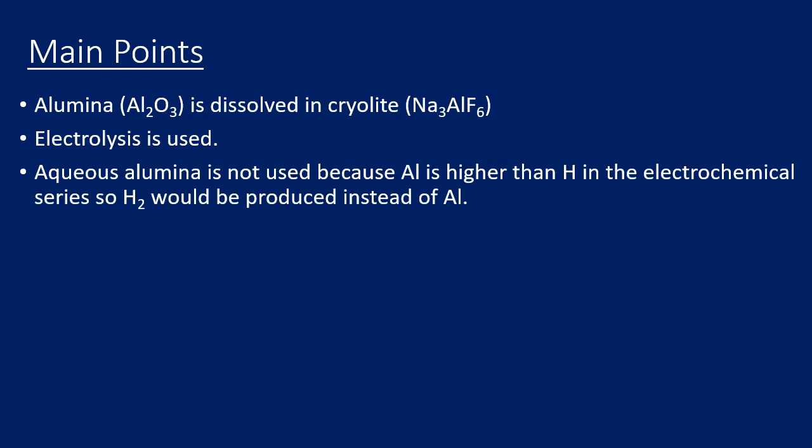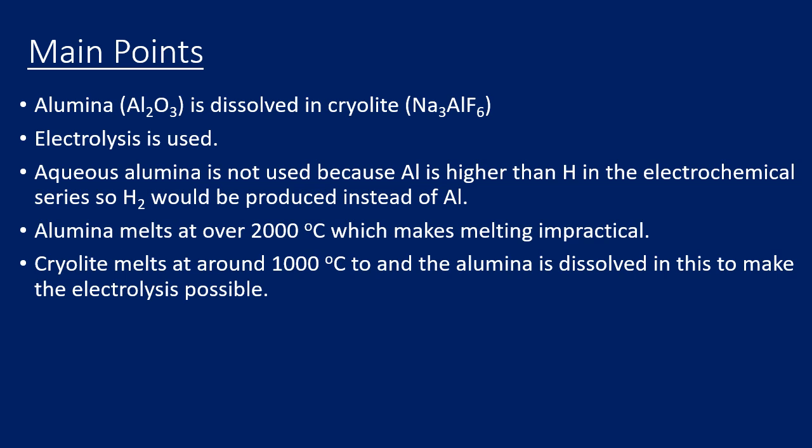Now we can't use aqueous solutions here because if we were to use aqueous alumina, we would actually make hydrogen instead of aluminium because aluminium is higher than hydrogen in the electrochemical series. If we were to use molten alumina, it would be very impractical because the melting point is so high that it would require an awful lot of energy to heat it to such a temperature. That's why cryolite is added - because cryolite melts at a much lower temperature, not a particularly low temperature at a thousand degrees, but it's much lower. The alumina dissolves in this molten cryolite, and that makes the electrolysis possible at a thousand degrees instead of two thousand degrees, which means a lot less energy is needed.